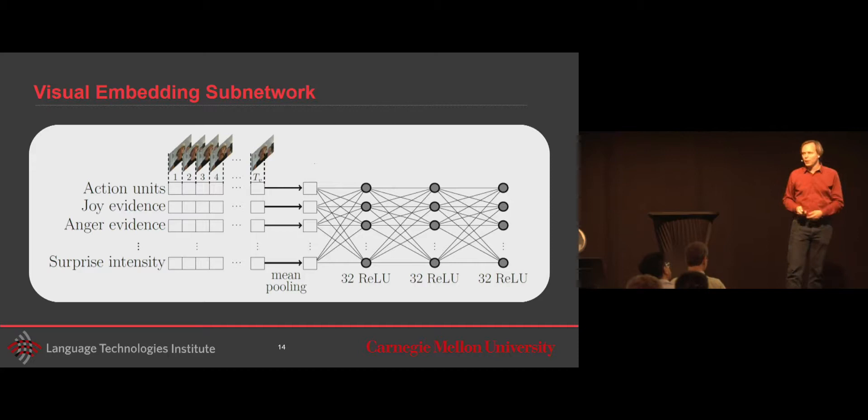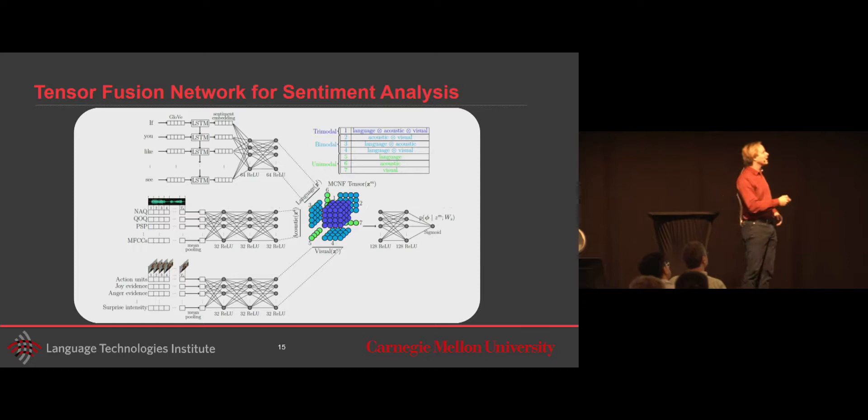This is everything put together. Really, the core is here, the tensor fusion. And the tensor fusion brings together the language, the acoustic, and the visual. And then we have, at the end, a simple layer to do the prediction.